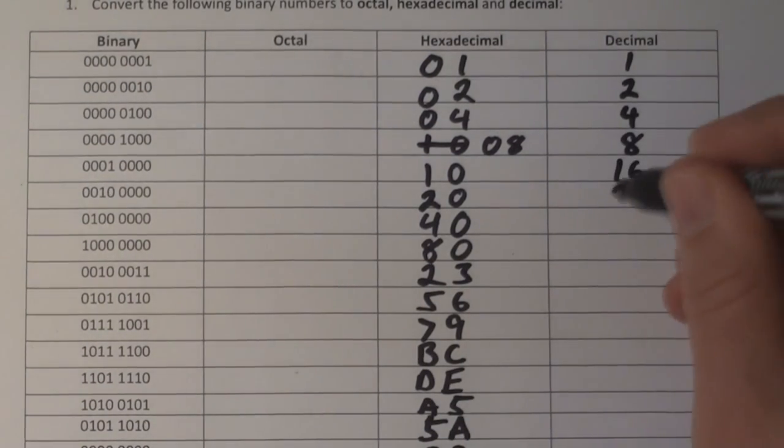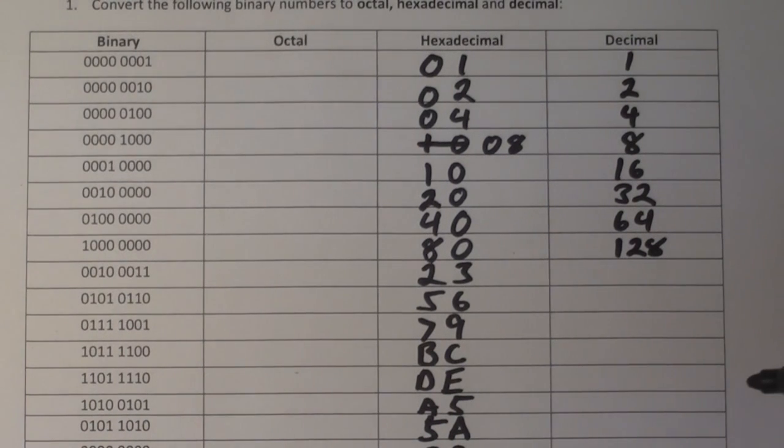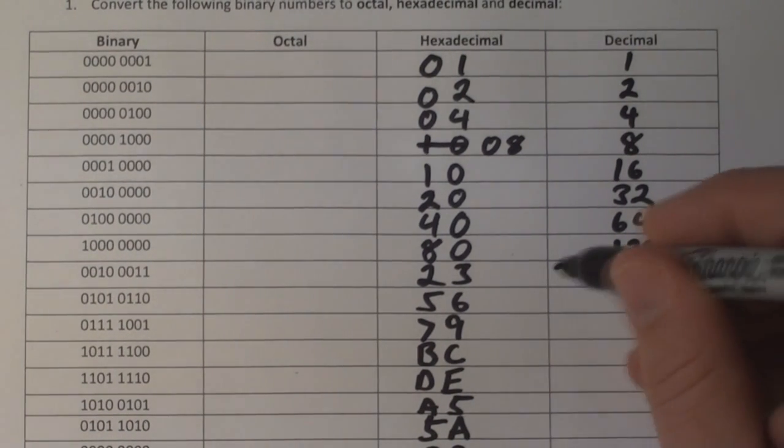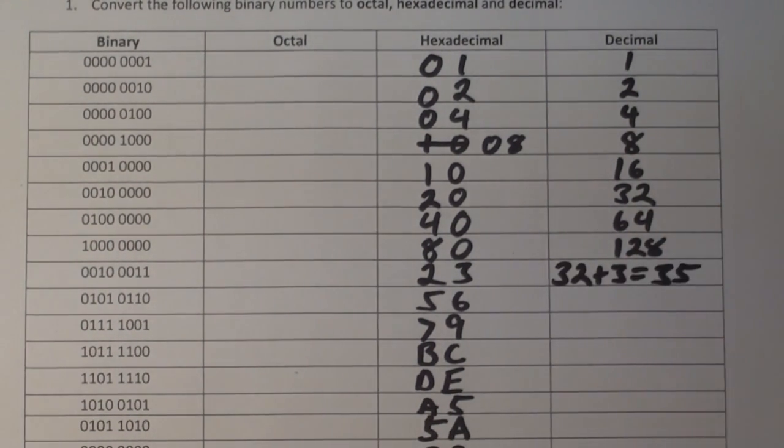For conversion to decimal, again, it's just the weighted column for the bit in the single bit.